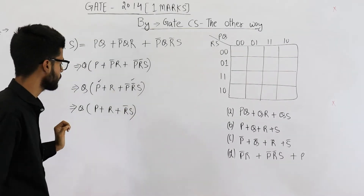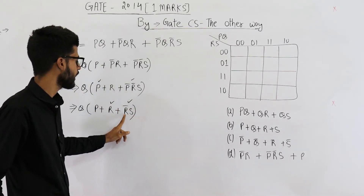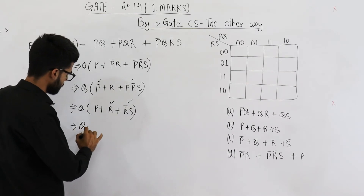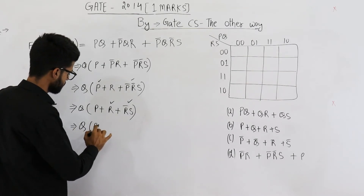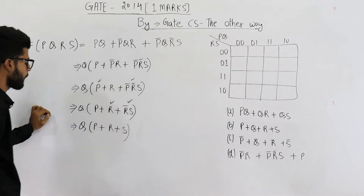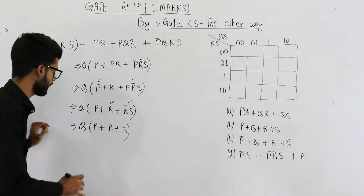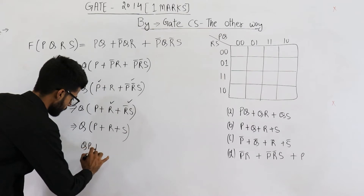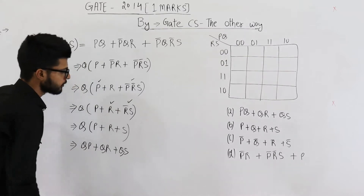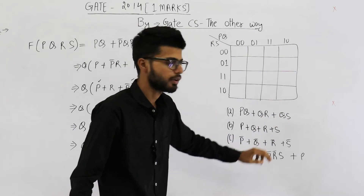If you apply the absorption law once on this term as well as this term, you will get P + R, and this will be reduced to R-bar·S. Now again, absorption law is applicable: x + x-bar·y reduces to x + y. So finally you get QP + QR + QS.